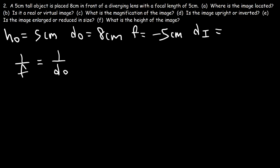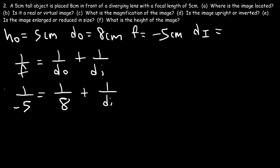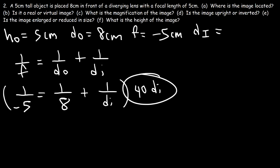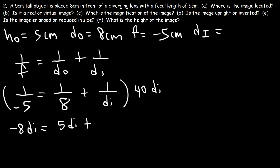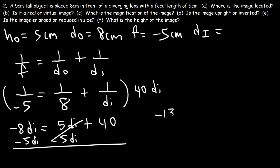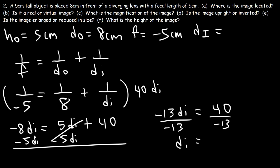Using the thin lens equation with F equal to negative 5 and DO equal to 8, multiply both sides by 40 DI. So 40 DI divided by negative 5 gives negative 8 DI, and 40 DI divided by 8 gives positive 5 DI, and 40 DI divided by DI gives 40. Subtracting 5 DI from both sides: negative 8 minus 5 is negative 13 DI equals 40. Dividing by negative 13, DI equals negative 3.077 centimeters. That's where the image is located.